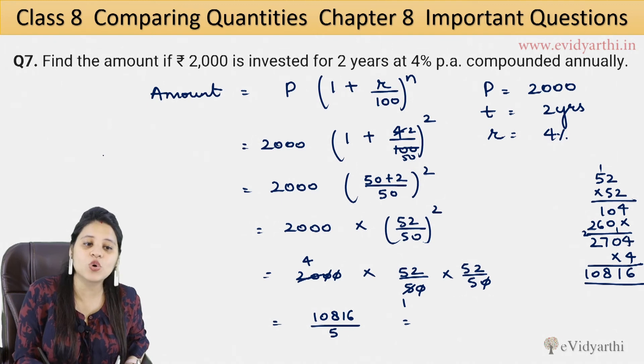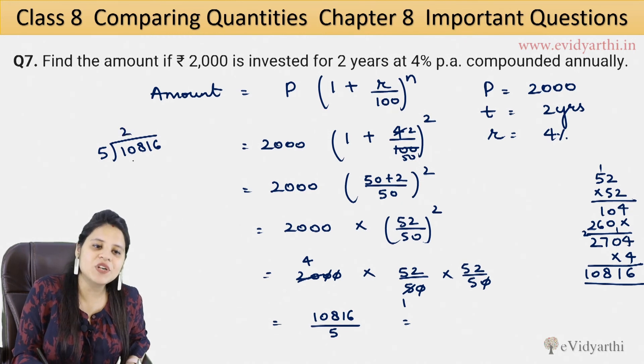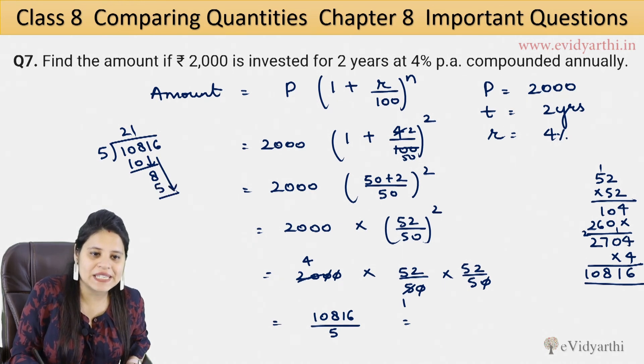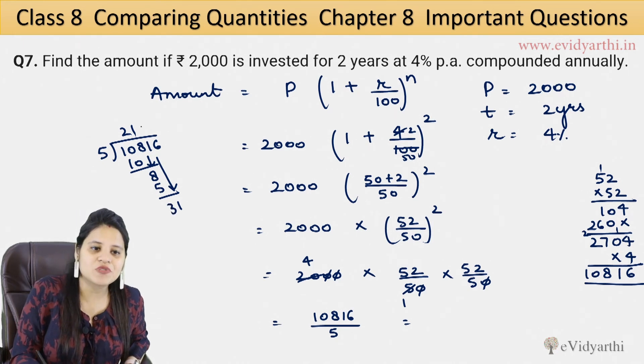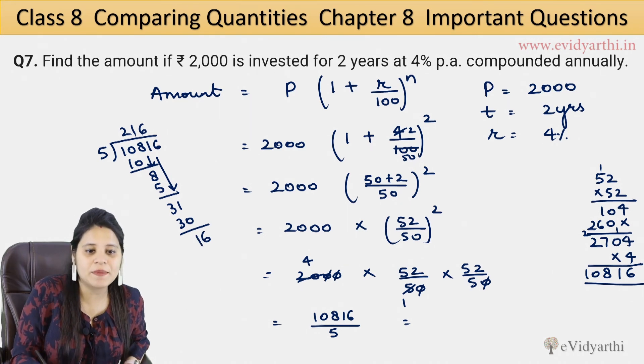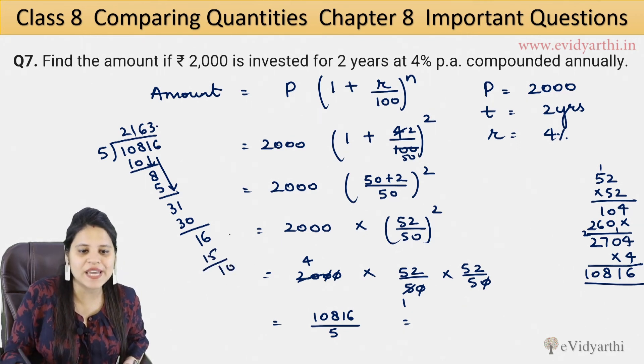Now we have to divide this from 5. So 10816 divided by 5, 5 into 2 is 10, here is 8, then 5 times 1 is 5, then here is 1. So here is 1, and 5, 6, 7, 8, 31. So 5 into 6 is 30. Then 16, so this will be 5 into 3 is 15, and 5 into 2 is 10.